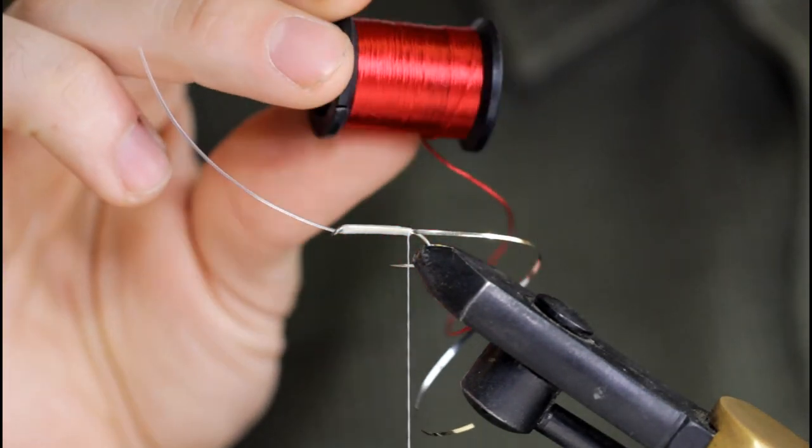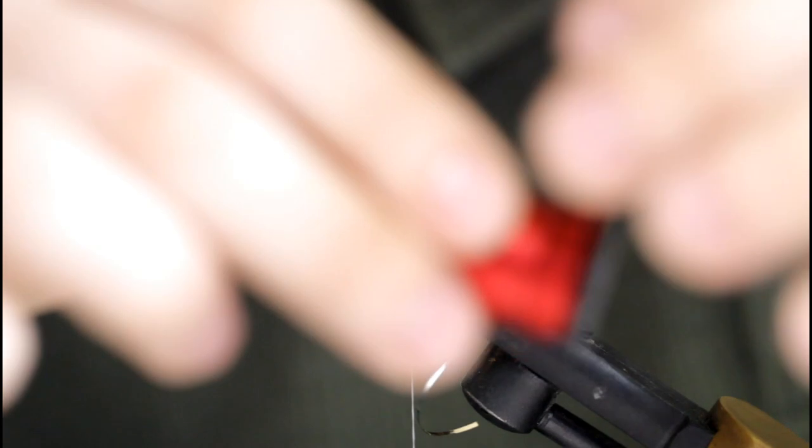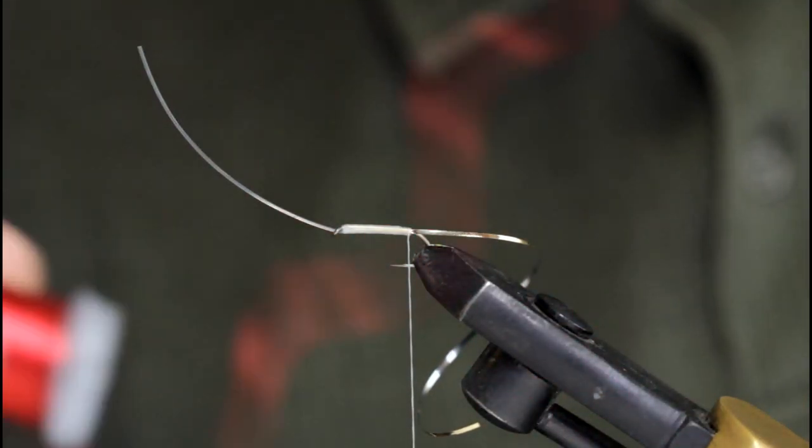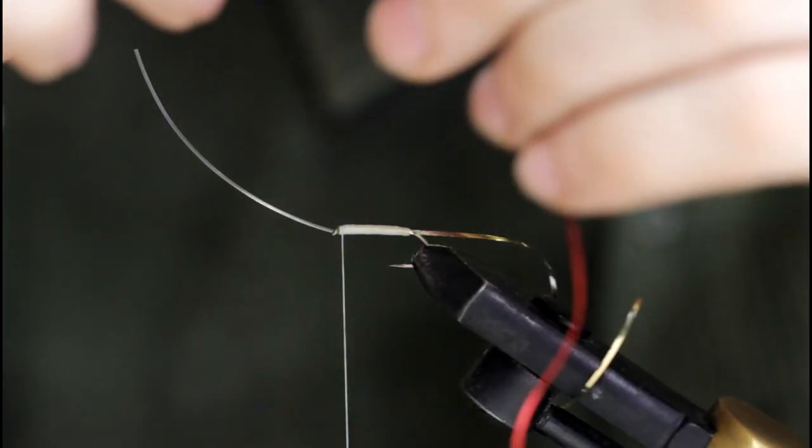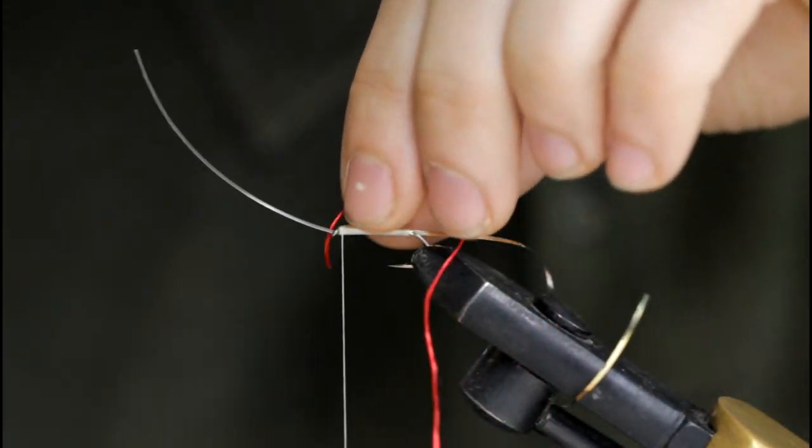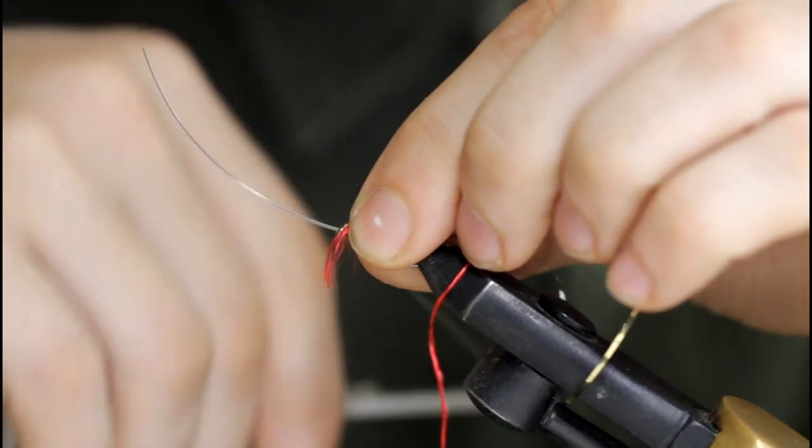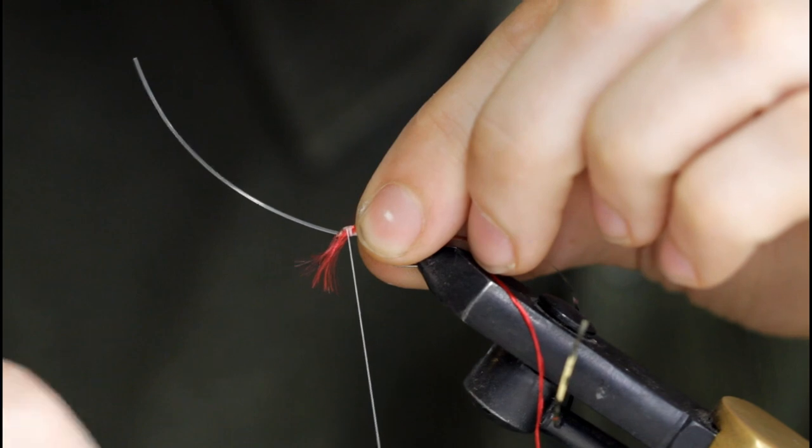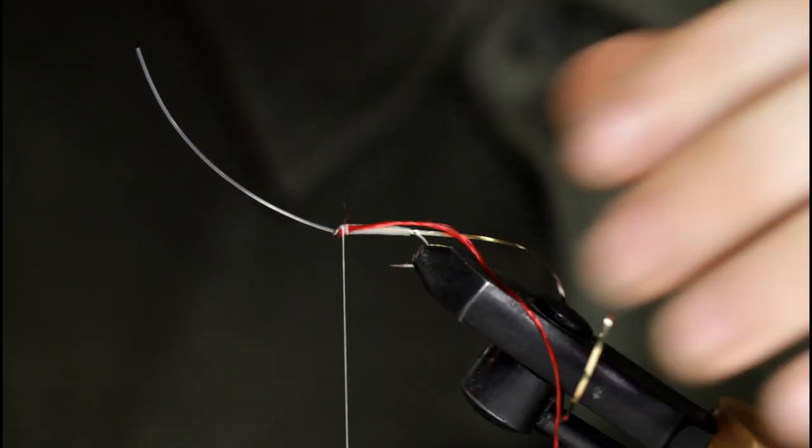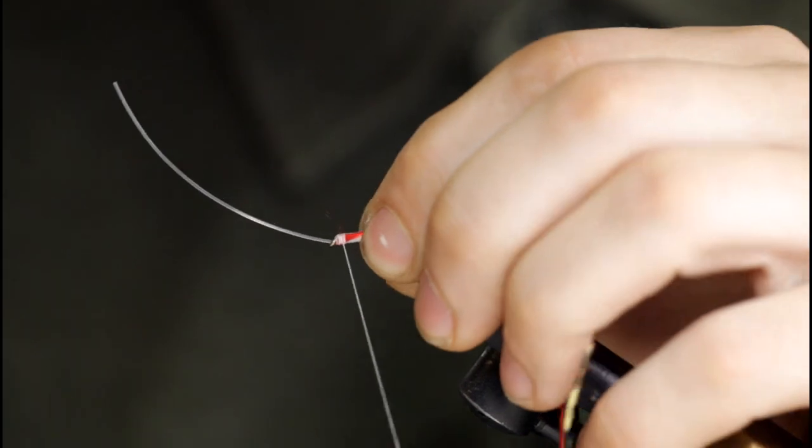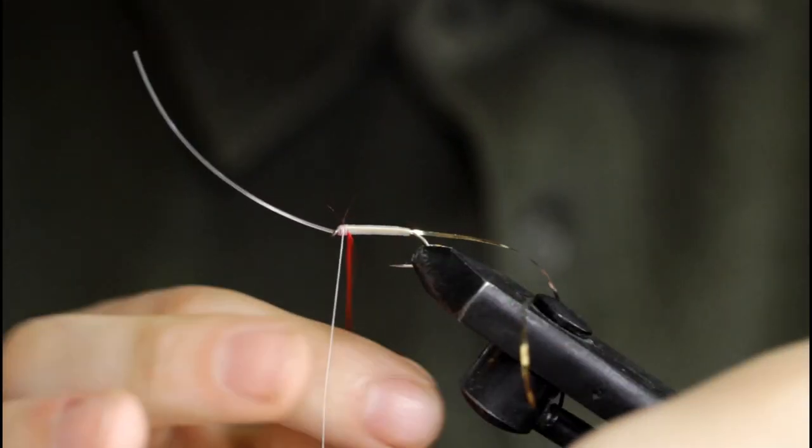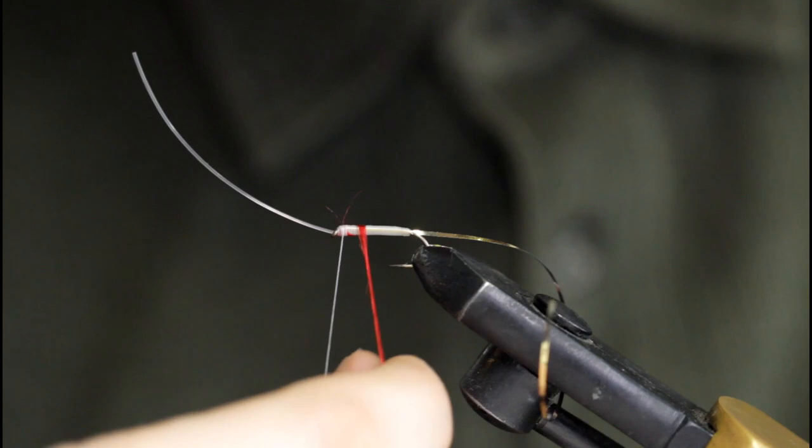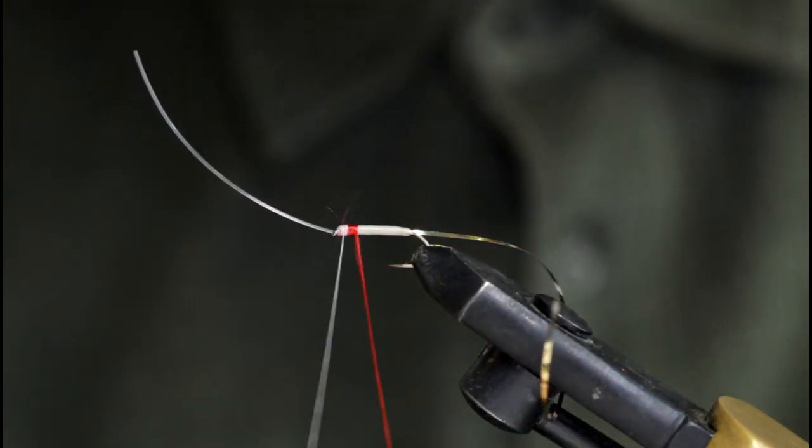I'm going to grab some uni floss in red. Any red floss will do. Tie this in at the hook eye and snip off the extra. All right, bind the floss down. I'm just going to take some turns down to where I stopped before.